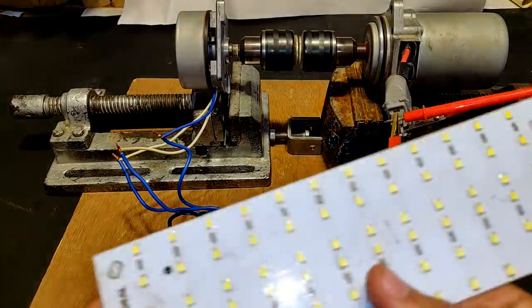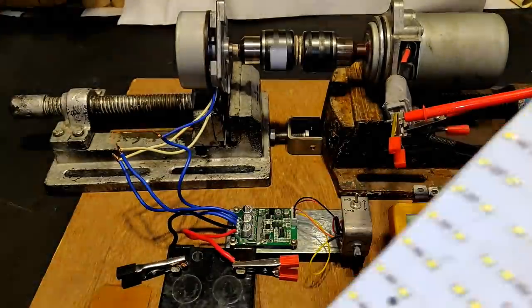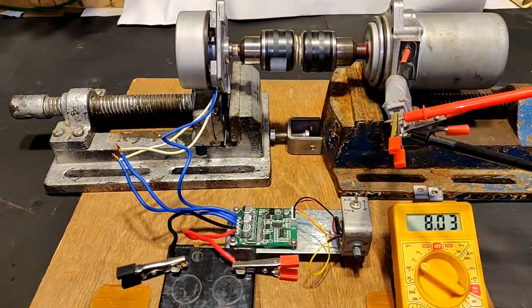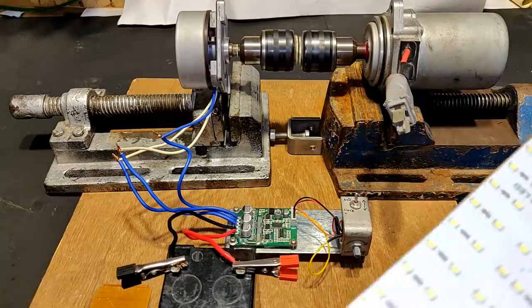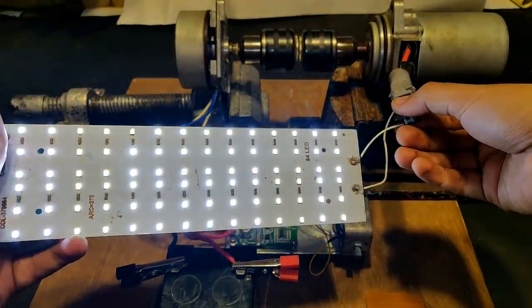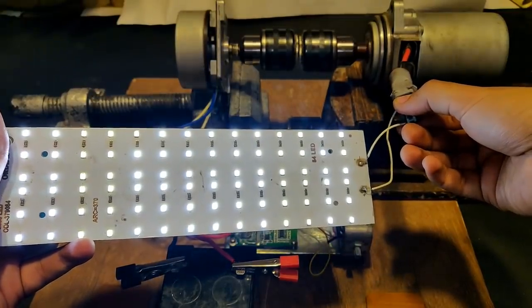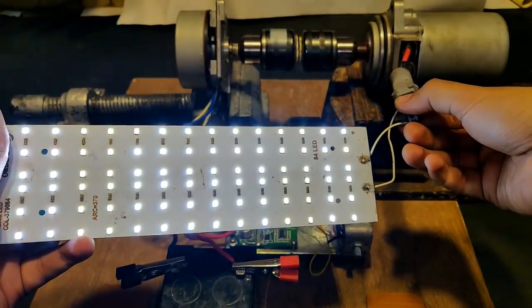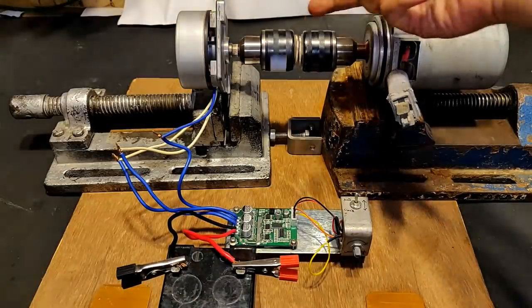Let's connect this 84 LED load to it and I think it should start glowing. You can see it is running and the magnetic locking is strong enough that even though I have connected the load it is not getting dis-aligned.